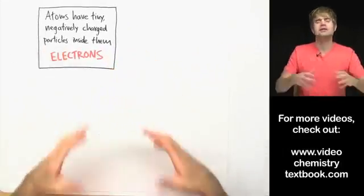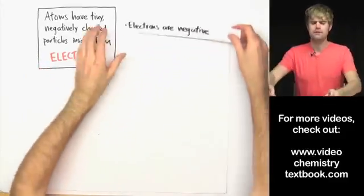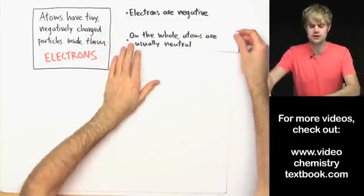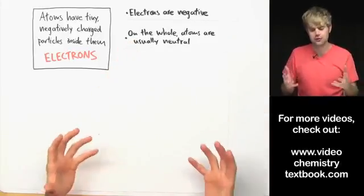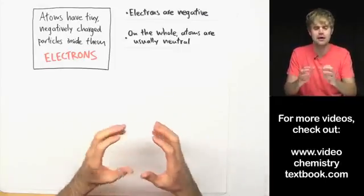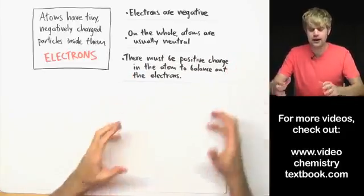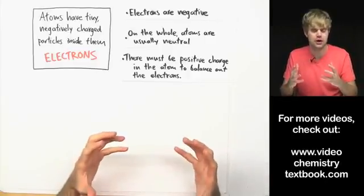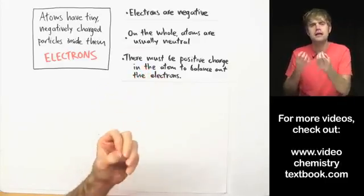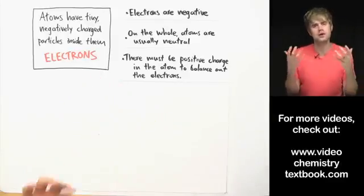So, here is the model of the atom that Thompson comes up with. He realizes, first of all, that electrons are negative. We already talked about that. But then he notices that on the whole, atoms in general are usually electrically neutral. So even though they have these negatively charged electrons inside them, the atoms as a whole don't have a charge. So, Thompson realizes that in order for the atoms not to have a charge, there must be some positive charge in the atom that can balance out the negative charge of the electrons. And then the positive and the negative balance out and the atom then as a whole doesn't have a charge.